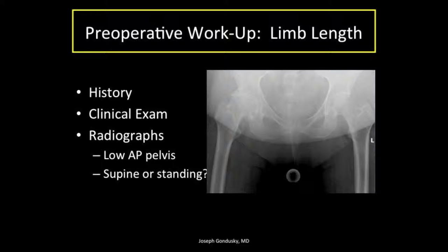There's debate regarding whether that x-ray should be in the supine or standing position. The pelvis changes in these positions such that it reclines from supine to standing, increasing acetabular cup anteversion. But for limb length determination the symmetry is what matters and this measurement should not be affected. The thing that matters between those positions is how cup version is determined intraoperatively and how the AP pelvis fluoroscopic image is recreated.